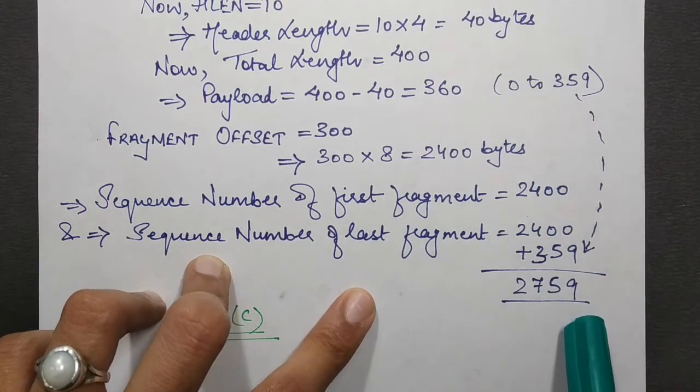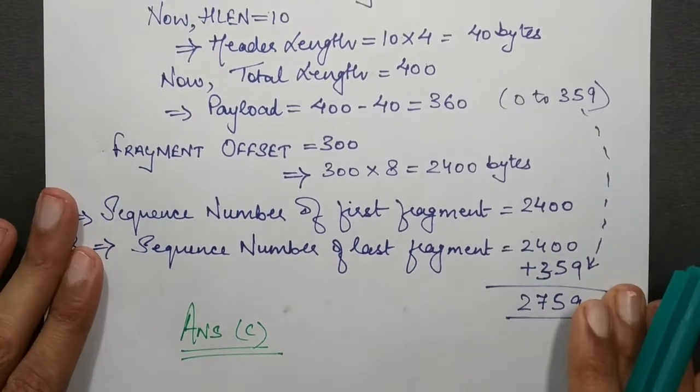So if we check out from the options, this is option C: Last fragment, 2400 and 2759.